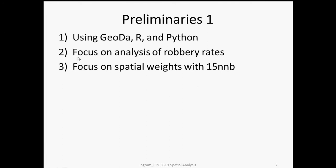The focus of the replication is on the robbery rates component of the analysis reported in the article. Messner et al. examined both robbery rates and assault rates. The tools and techniques are the same for both, so we're just going to focus on robbery rates here, and I leave the replication of assault rates to you. Their core results use a spatial weights matrix of 15 nearest neighbors, with robustness checks at 13 and 17 nearest neighbors. The replication here only does the analysis with 15 nearest neighbors.